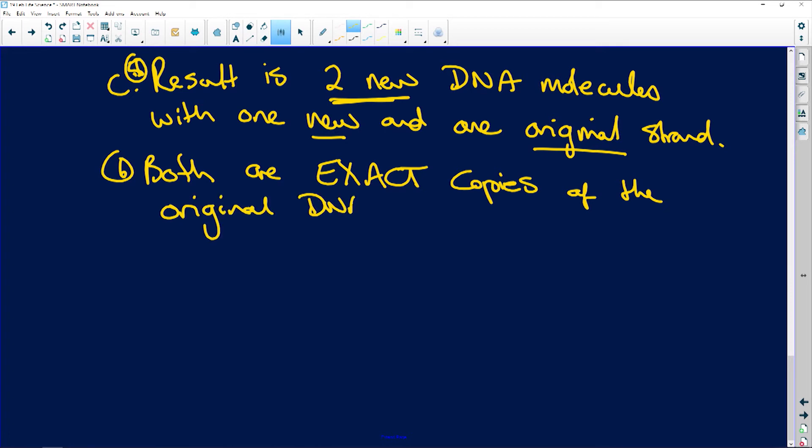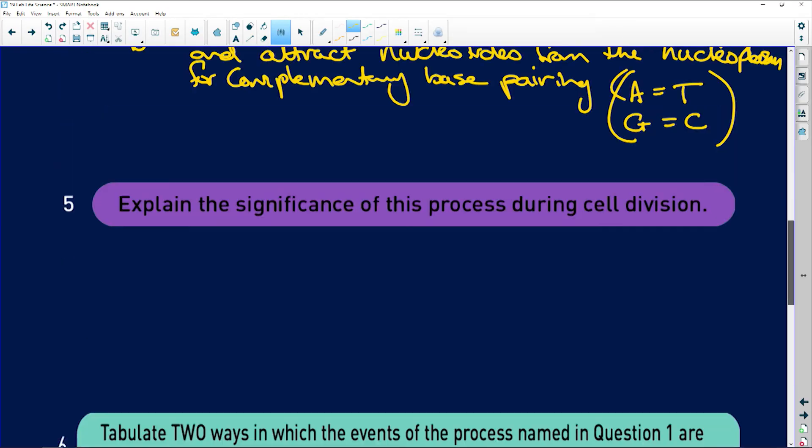What's really important is that you have that strand unwinds, it unzips, new nucleotides come along that are present in the nucleolus and form complementary bases. The DNA now has two original strands, two new strands, but they're identical to the original one.